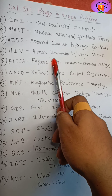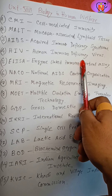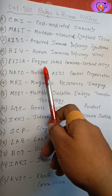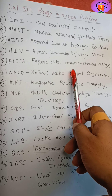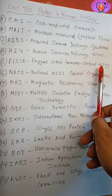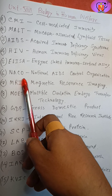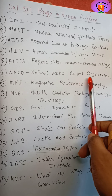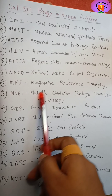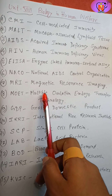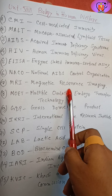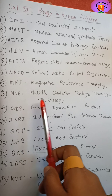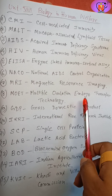ELISA: Enzyme Linked Immunosorbent Assay. NACO: National AIDS Control Organization. MRI: Magnetic Resonance Imaging. MOET: Multiple Ovulation Embryo Transfer Technology.